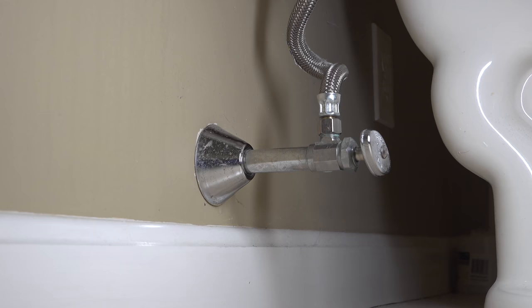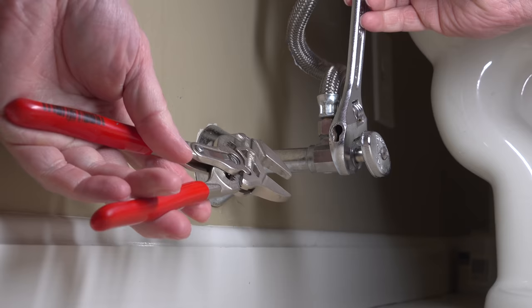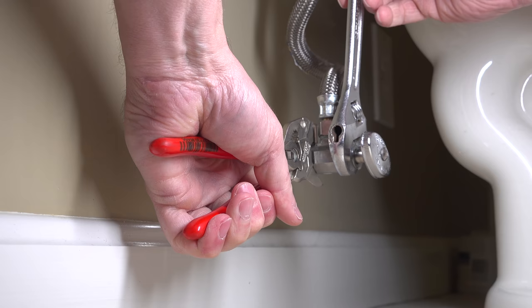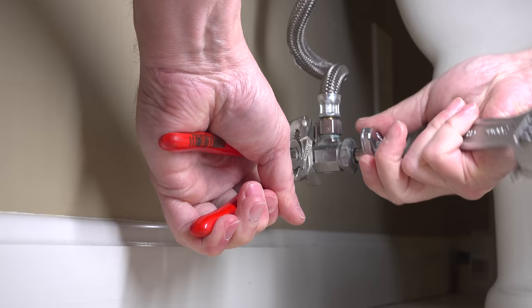Most often that front nut is going to turn fairly easily but if that thing is stuck or really on there, grab a second wrench or a set of channel locks like this and grab onto the body of the valve itself. And that should give you a little bit more leverage to allow you to turn that nut without rotating the valve itself. You don't want to cause any movement in the pipe that's going into the wall.